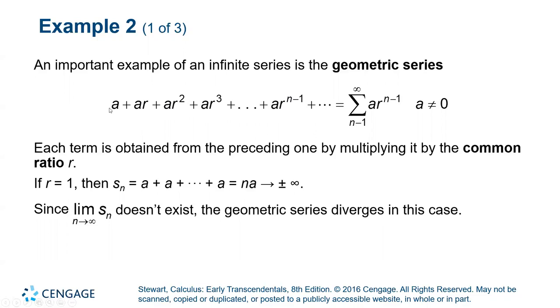Series that look like this are called geometric series where you have a constant times some value raised to an exponent. Each term is obtained from the preceding one by multiplying it by the common ratio. r is called a common ratio. For example, ar squared comes from ar times r. ar cubed comes from ar squared times r, and so forth. You can get each term by multiplying the previous one by r.